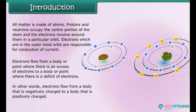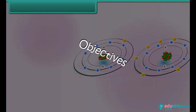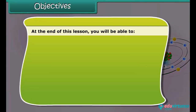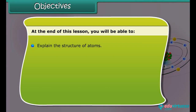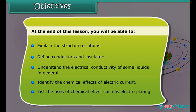Electrons flow from a body that is negatively charged to a body that is positively charged. At the end of this lesson you will be able to: explain the structure of atoms, define conductors and insulators, understand the electrical conductivity of some liquids in general, identify the chemical effects of electric current, and list the uses of chemical effects such as electroplating.